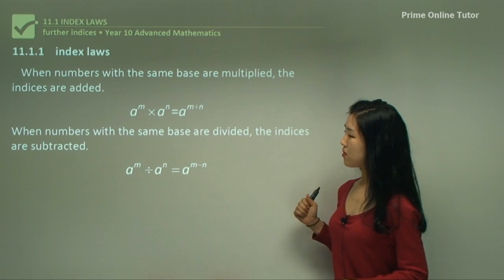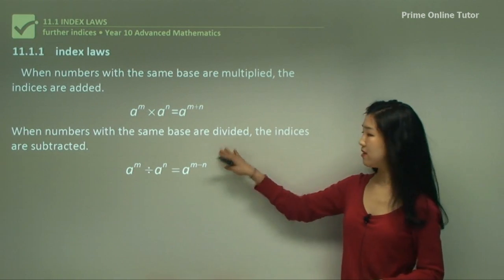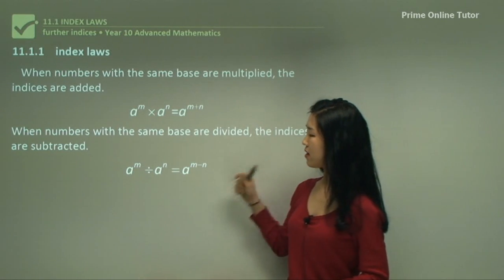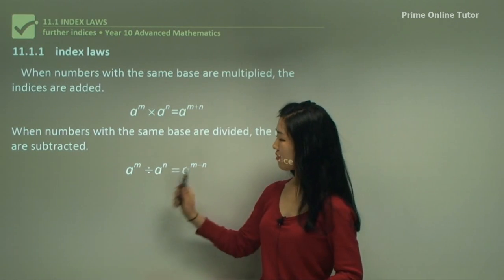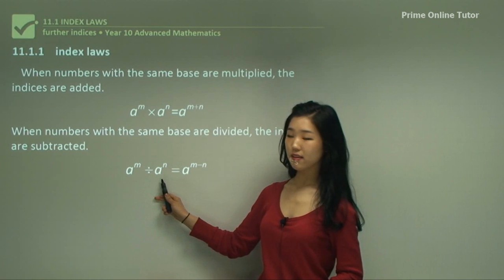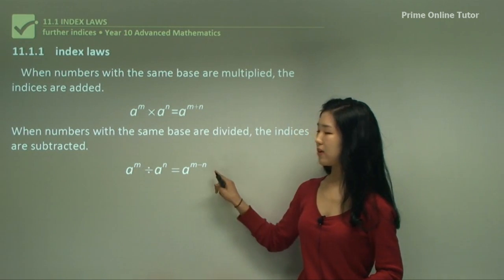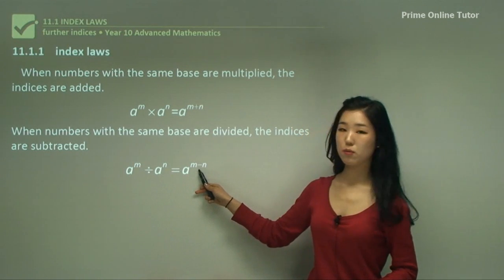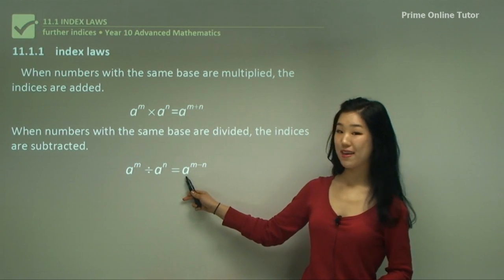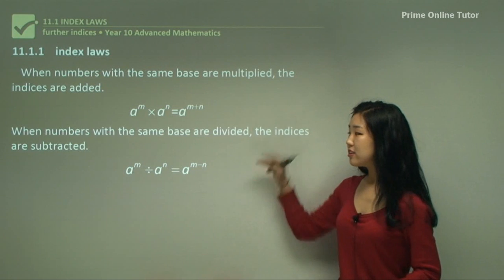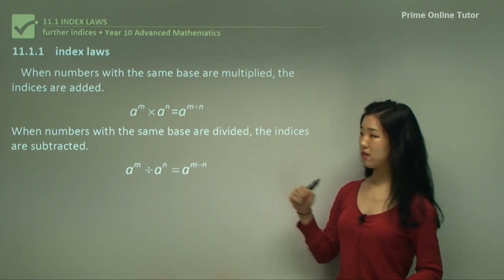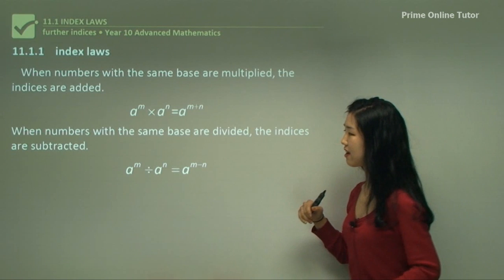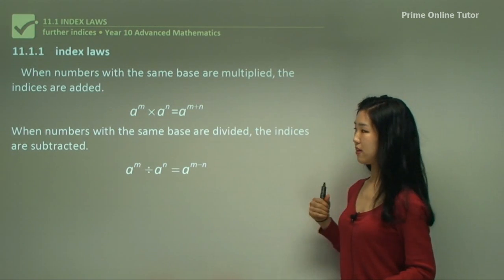Now here, when numbers with the same base are divided, the indices are then subtracted — the opposite manner to the first law. When we're dividing, as long as you have the same base, you subtract the indices. So m minus n is what we get, and the base remains as a. That's all you need to remember for this section, so write that down because we're going to keep using these two laws.